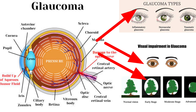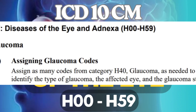Now the first guideline under Glaucoma is assigning Glaucoma codes. Whenever Glaucoma is documented, you can assign many codes from category H40 — Glaucoma — to identify the type of Glaucoma, the affected eye, and the Glaucoma stage. These three things should be captured in the diagnosis. You can assign as many codes as necessary to appropriately identify the type, the affected eye (right or left), and the stage.